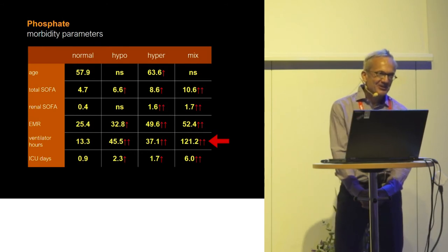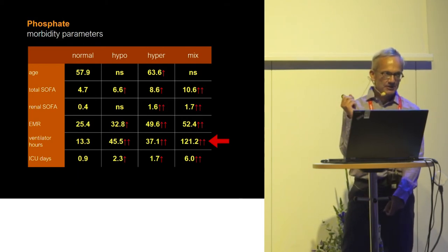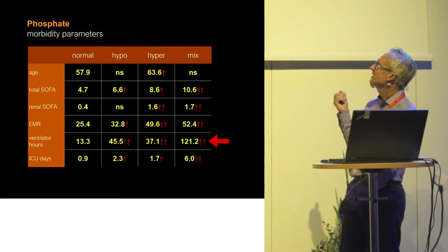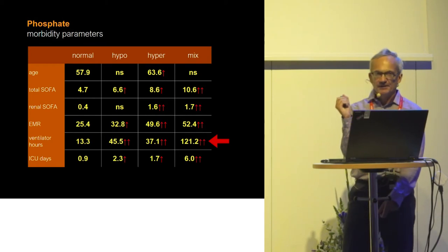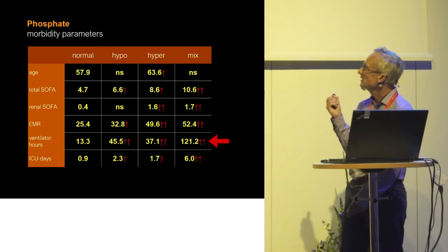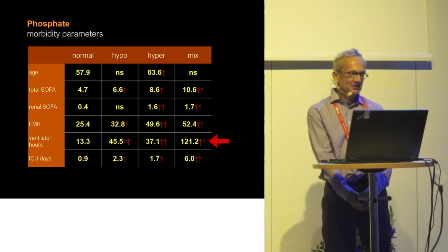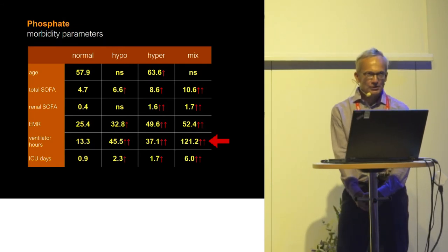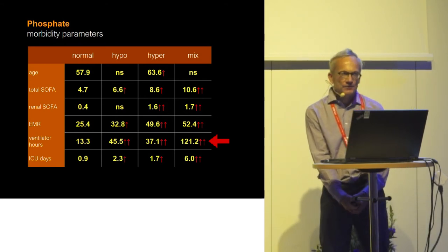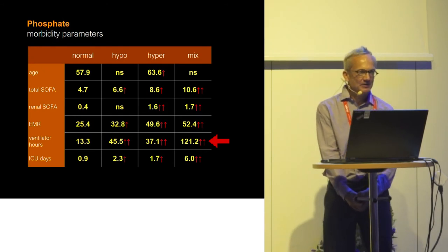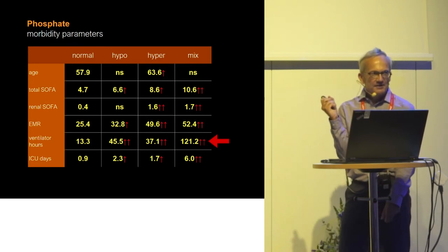In my retrospective material it is really difficult to calculate if this is an independent effect of the ion deviation, or if it is simply the fact that patients with a variable phosphate profile are more sick and therefore have longer ventilation times. But all textbooks and data point to the fact that both hypo- and hyperphosphatemia can, for instance, make respiratory muscles weaker. So this data is in line with that, of course.